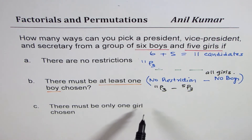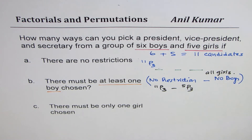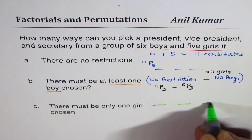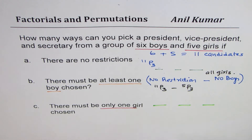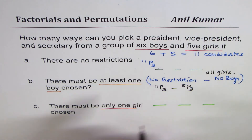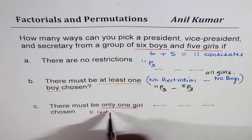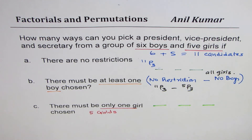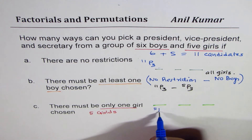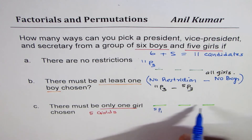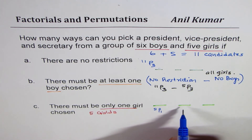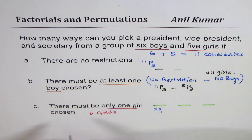Condition C: there must be only one girl. We have three positions and we want only one girl. One girl is taken from five girls, so that is 5P1. Since there are two other positions to be filled, these two can only be filled by boys. There are six boys, so we need 6P2.